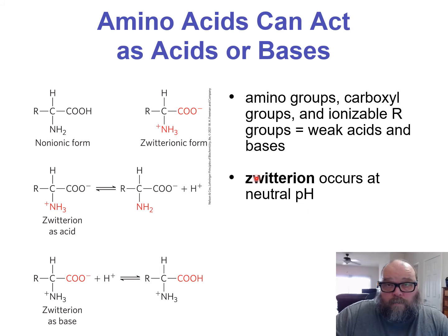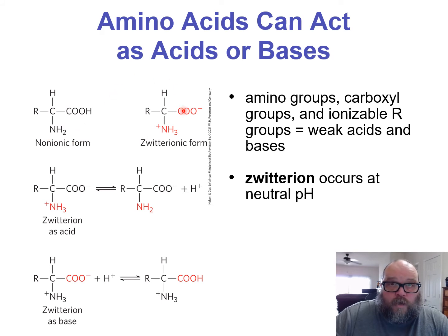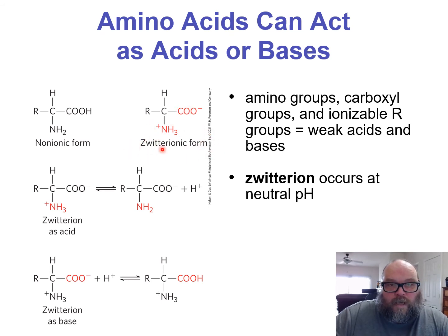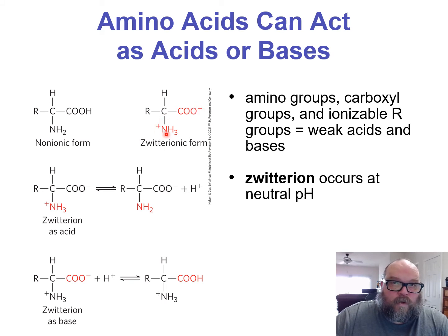As you hopefully remember from organic chemistry, the amino acids' overall shape and charge are going to change based on the pH of the solution they're in. Going from a ionic form, as the pH changes, it becomes what is referred to as zwitterionic: NH2 becomes NH3-plus, COOH becomes COO-negative. They are now charged, but since there's a negative and a positive, they are in balance — the zwitterion form.